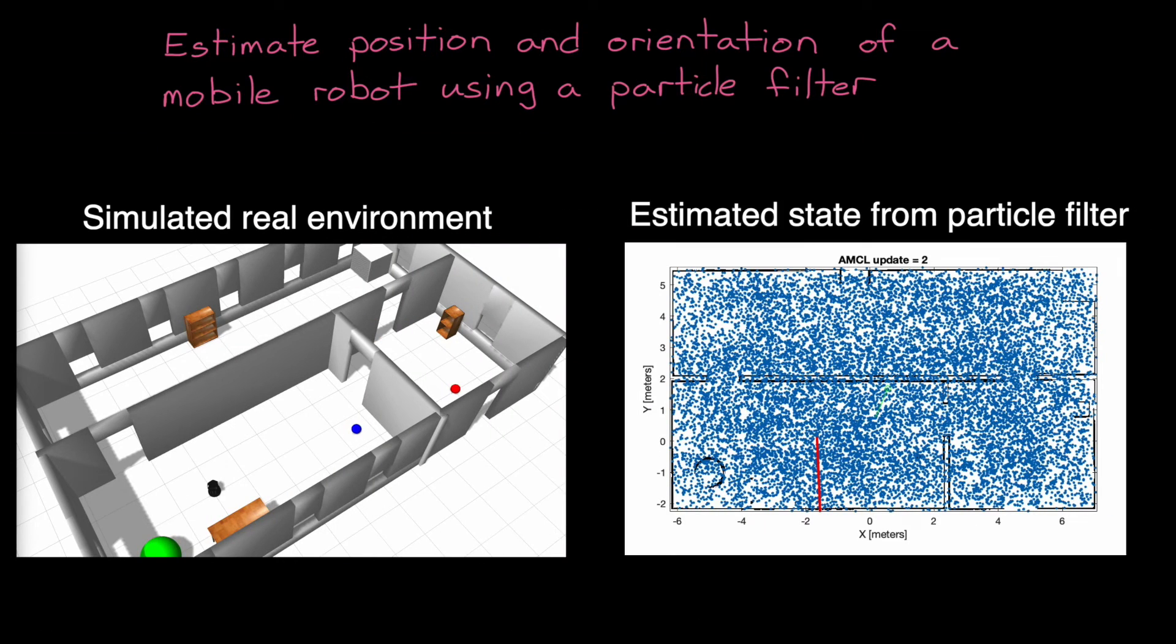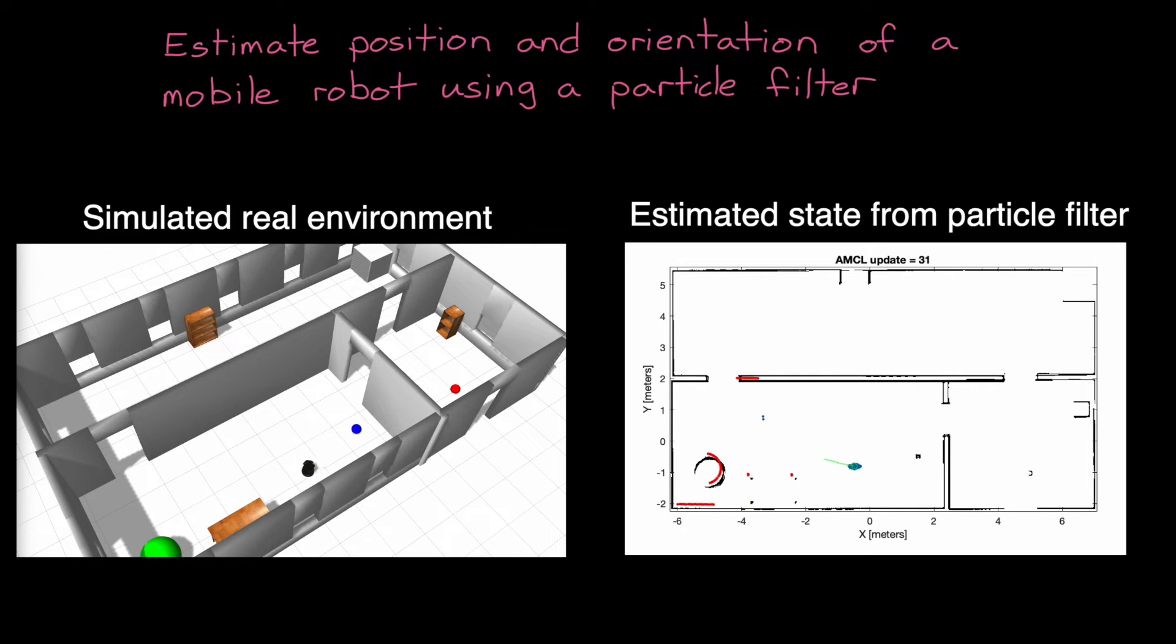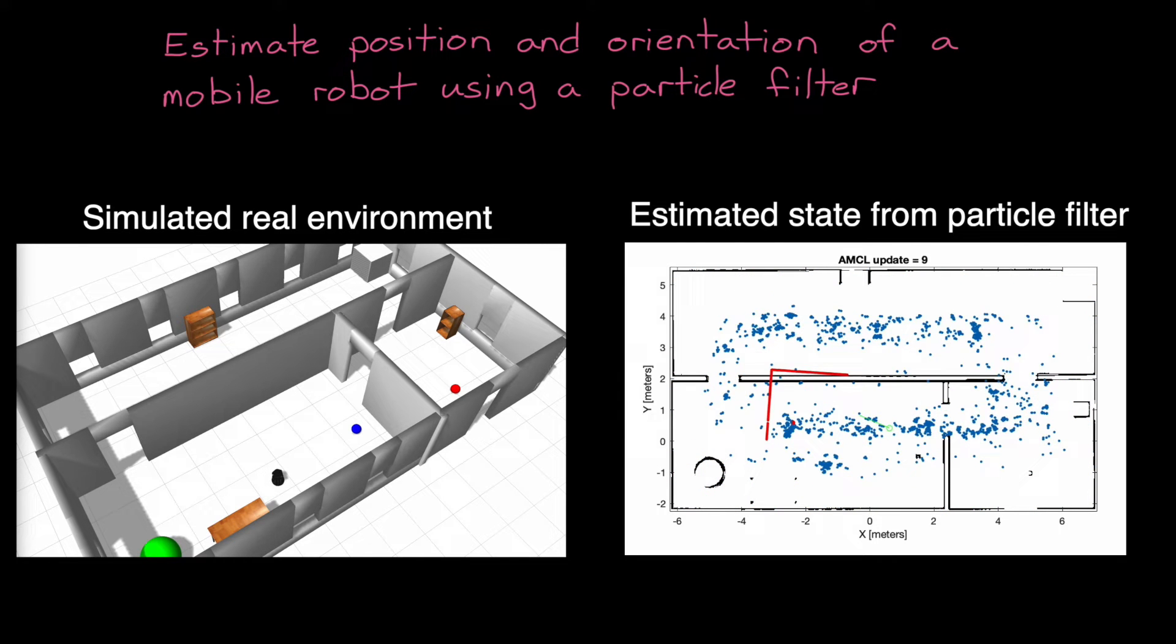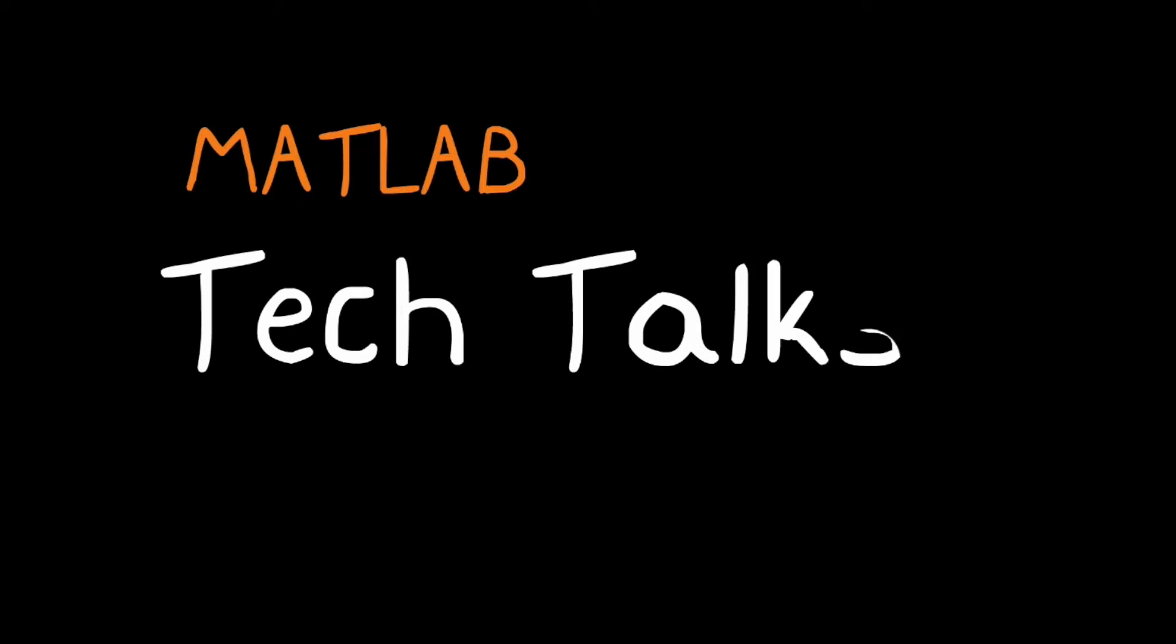This example simulates a TurtleBot moving around in an office building, taking measurements of the environment, and estimating its location. And if you're not familiar with the particle filter, it may be confusing as to why the solution has a bunch of blue dots appearing and jumping around each time step, and then somehow converging on the real location of the TurtleBot. What is this filter doing, and how does this seemingly random set of dots help us determine the location of a robot? That's what we're going to cover. I'm Brian, and welcome to a MATLAB Tech Talk.